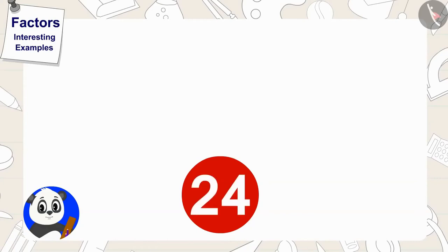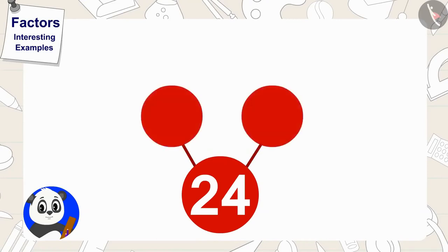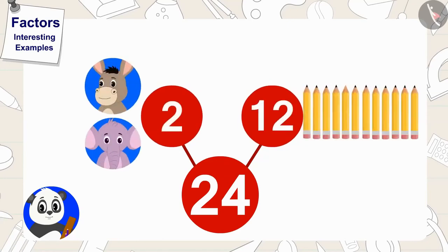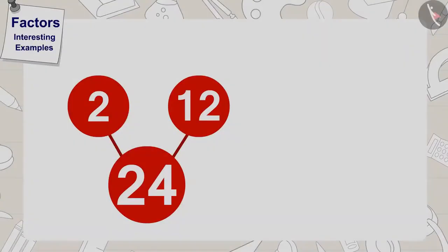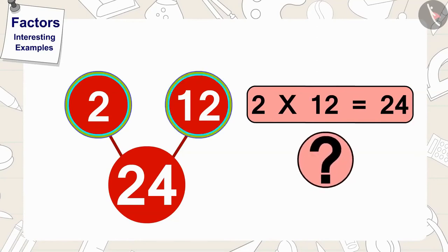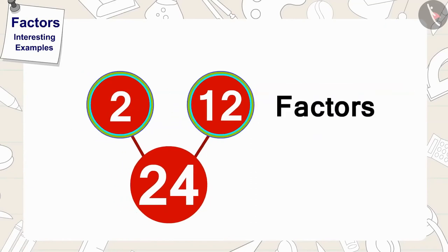He made a circle on a paper and wrote twenty-four in it. Then, he made two lines on the outside of the circle and two circles on the other end of it. In these circles, he wrote down the numbers two and twelve. Children, because two times twelve is twenty-four, so two and twelve are the factors of twenty-four.